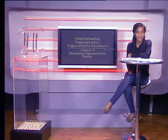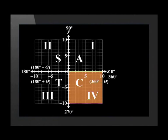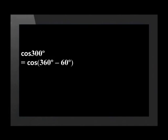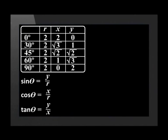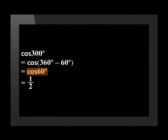Now let's try some questions together. In the first question, we need to find the value of cos of 300 degrees without a calculator. 300 degrees falls in the fourth quadrant where cos is positive. We write this as cos of (360 − 60) degrees, which reduces to positive cos of 60 degrees. This is one of the special angles. Using the special angles table — available in the series guide on the website — cos of 60 degrees equals one half.